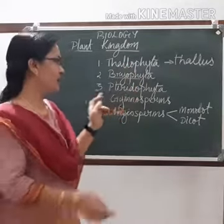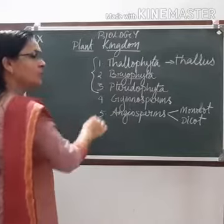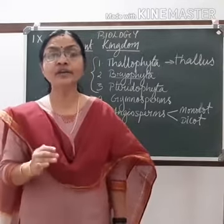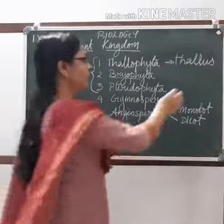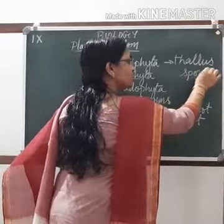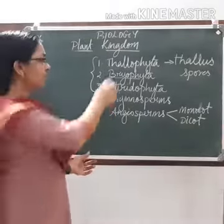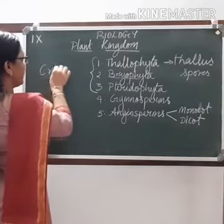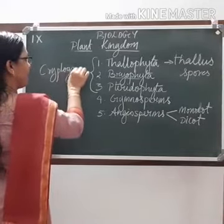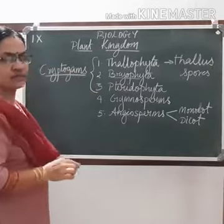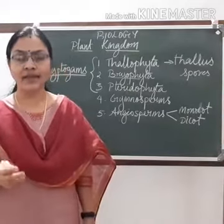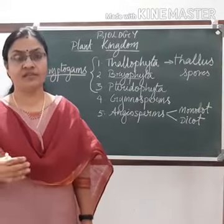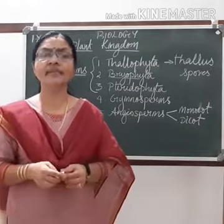Thallophyta, Bryophyta, and Pteridophyta are three divisions that include primitive plants. They do not have external reproductive organs and they reproduce through spores. These three divisions are grouped together and called Cryptogams — plants which do not have external reproductive organs, are primitive, and reproduce through spores.